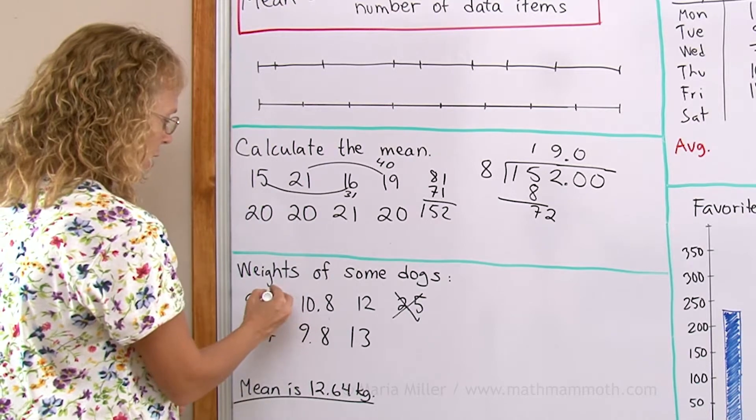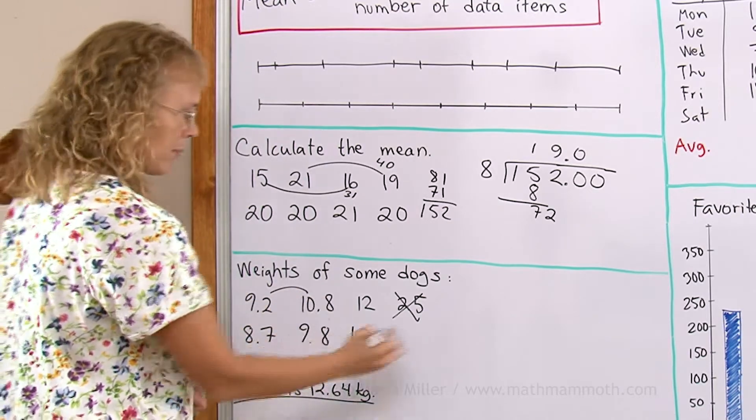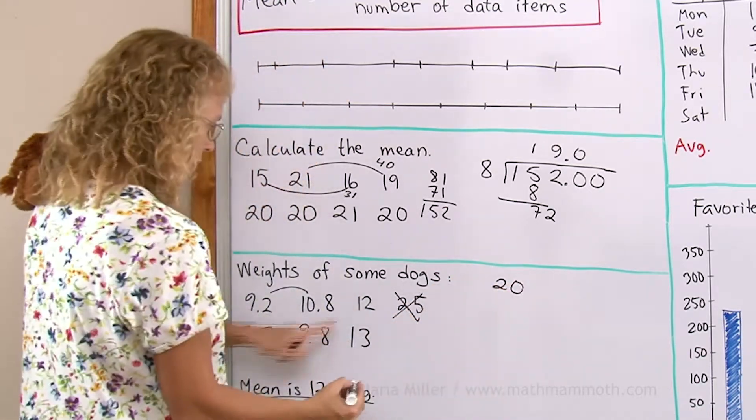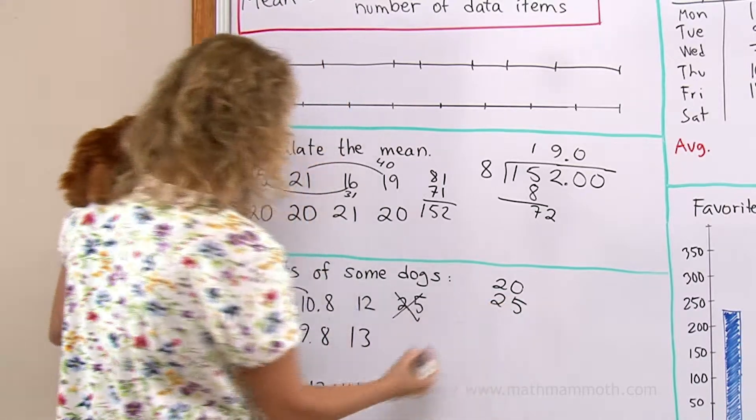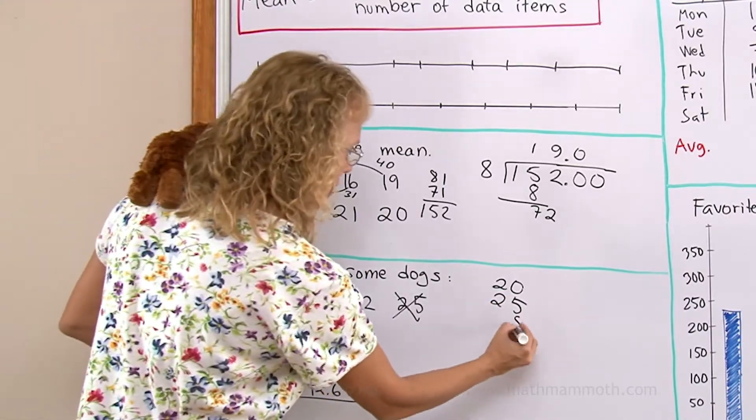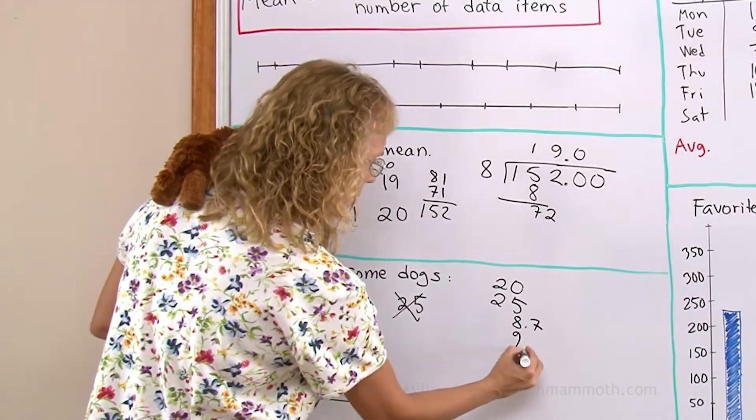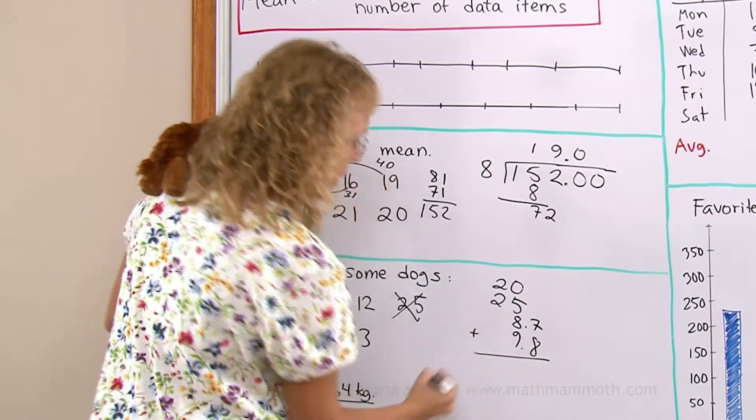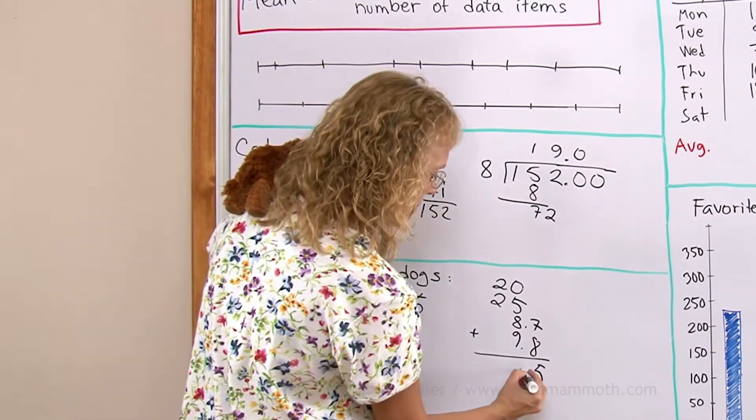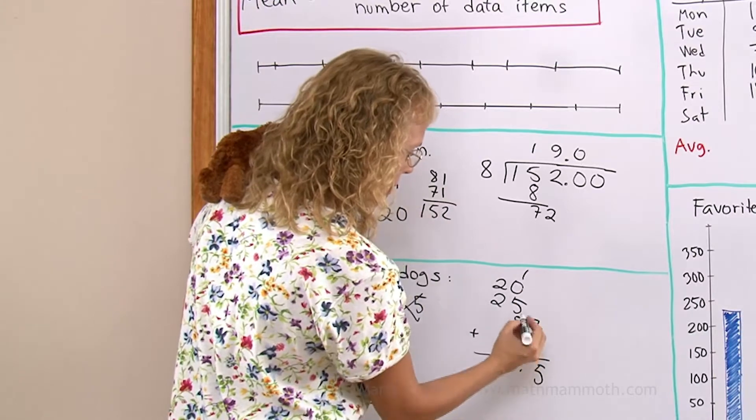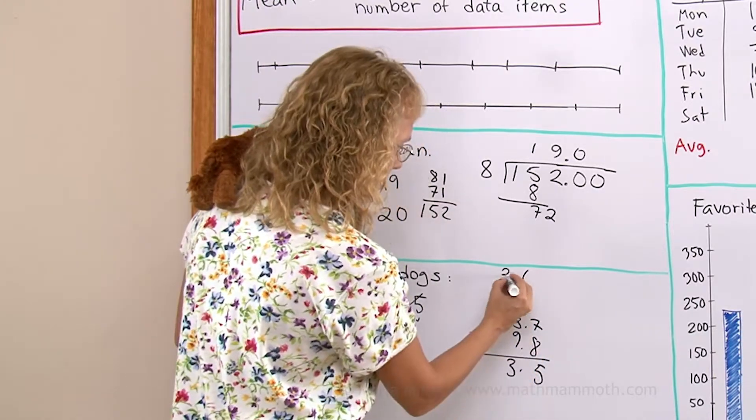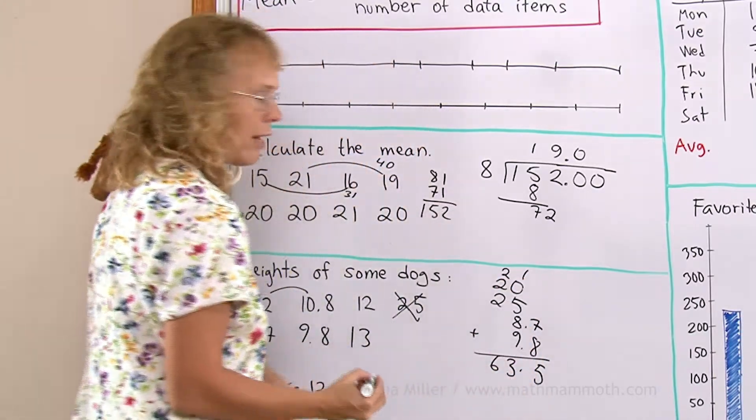Again, these two together add up to 20. So I have 20. Then these two are 25. Then over here, I'll write here 8.7 and 9.8. Add. It's 10, 23, 63.5. And now, long division.